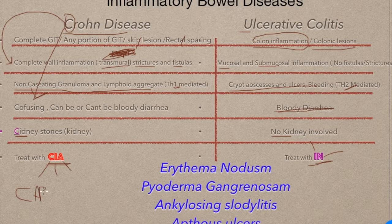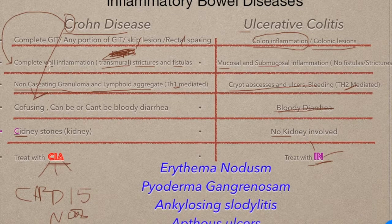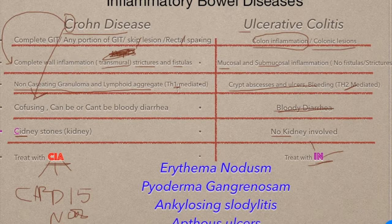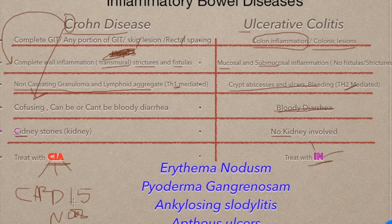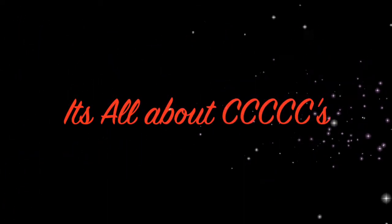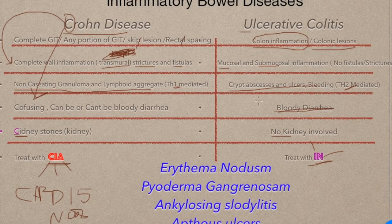The gene involved in Crohn's disease is CARD15, also called the NOD2 gene. To summarize, all Crohn's features start with 'C': Complete GIT involvement, Complete wall inflammation, non-Caseating granulomas, Confusing diarrhea, kidney (renal) involvement, CARD15 gene, and C comes first for T helper 1. The gene associated with ulcerative colitis is HLA-B27.